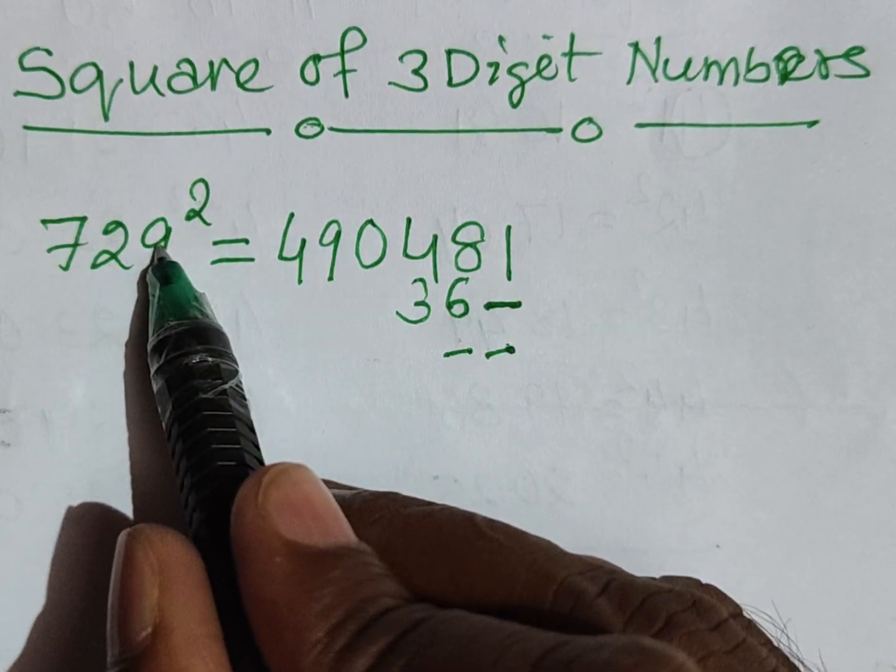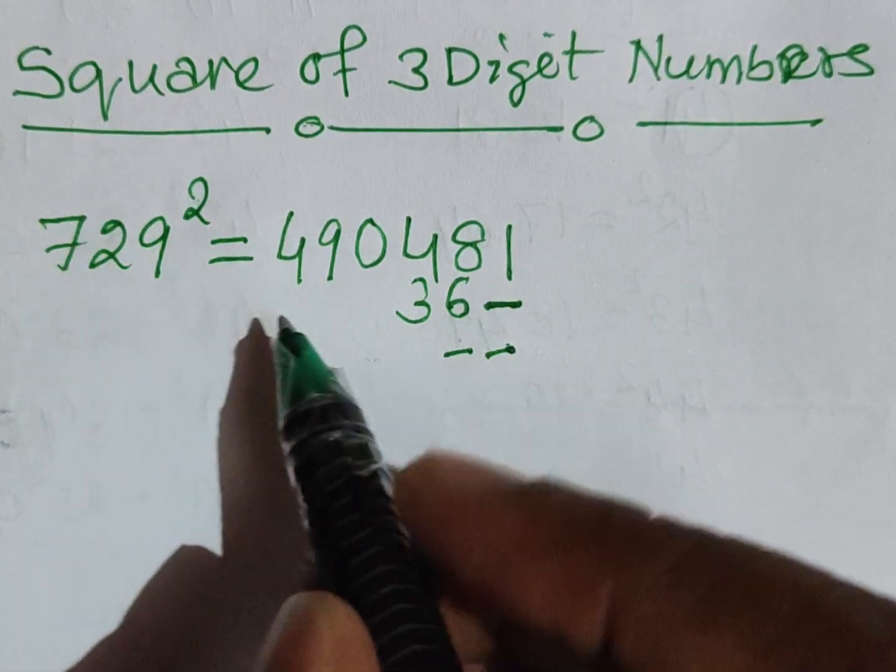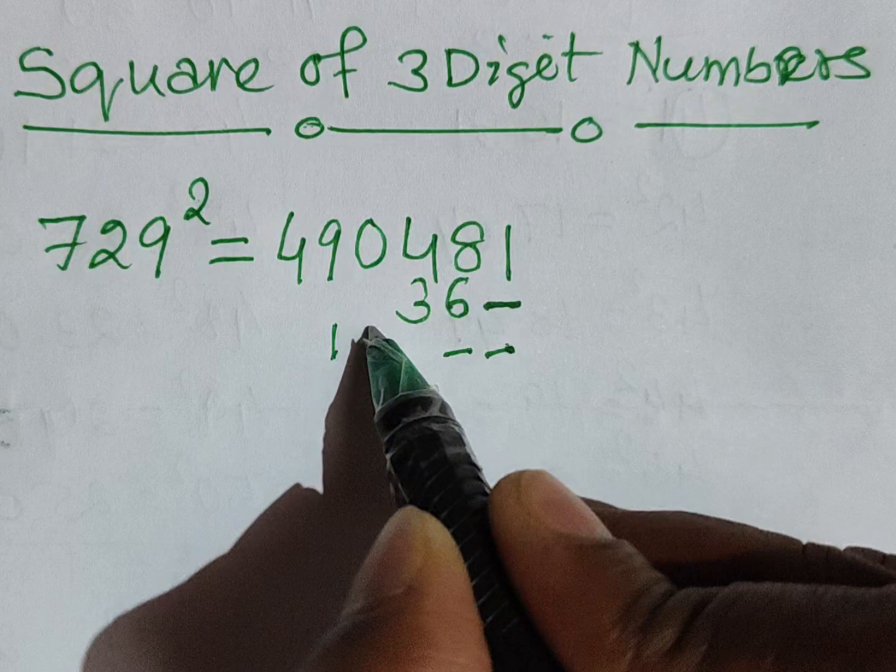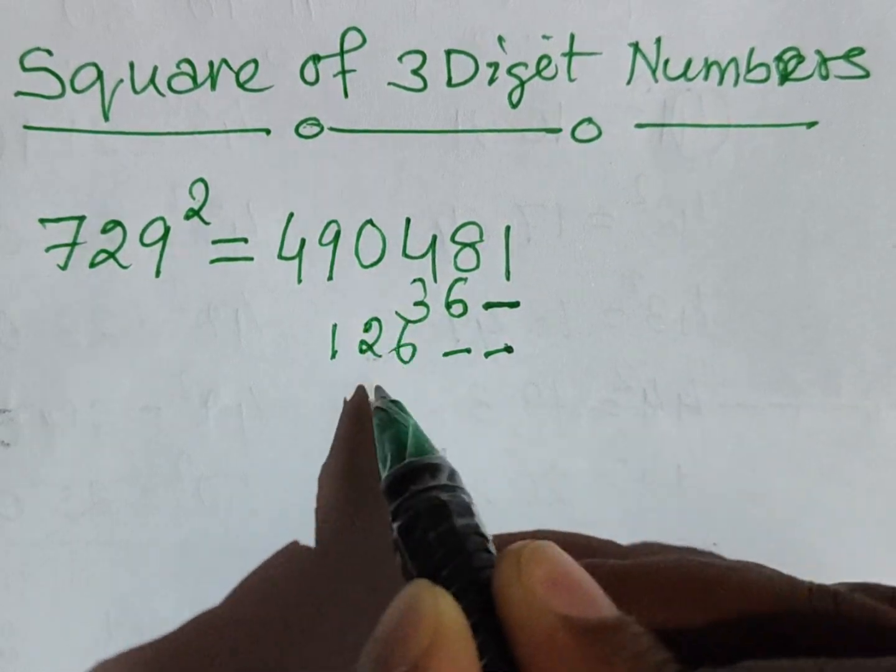Now write down the product: 2×9 is 18, 18×7 is 126.